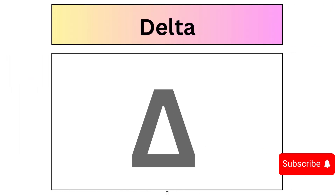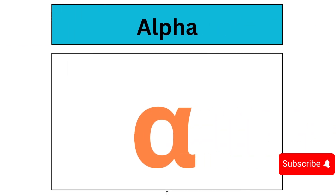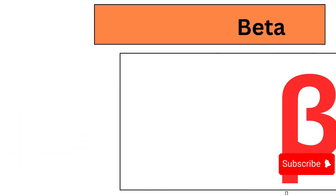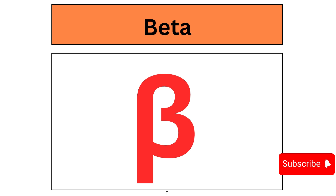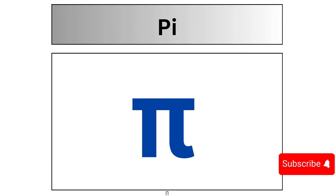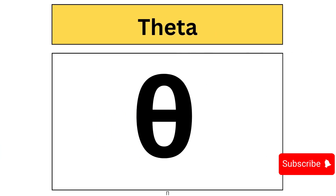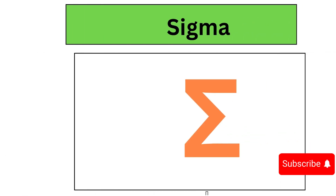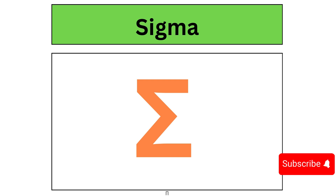Delta. Alpha. Beta. Gamma. Phi. Pi. Theta. Sigma.